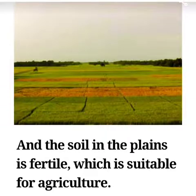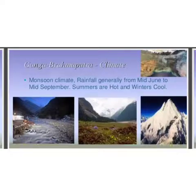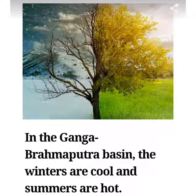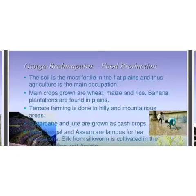Now, Ganga-Brahmaputra climate. It has a monsoon climate, with rainfall generally from mid-June to mid-September. Summers are hot and winters are very cool. The rainfall in the Brahmaputra basin is very heavy. Moni village gets flooded every year during the rainy season.